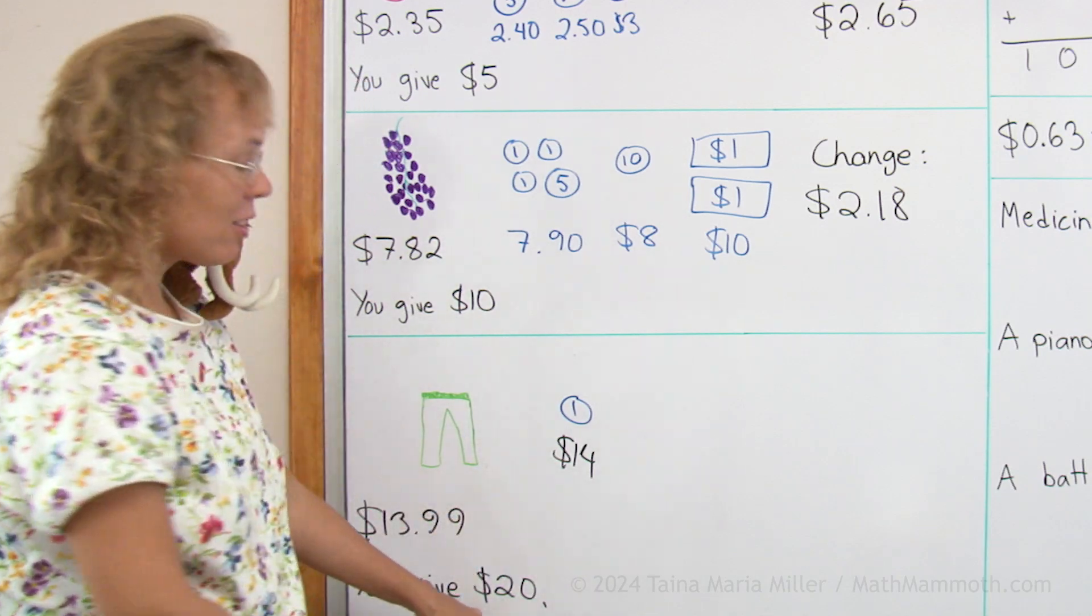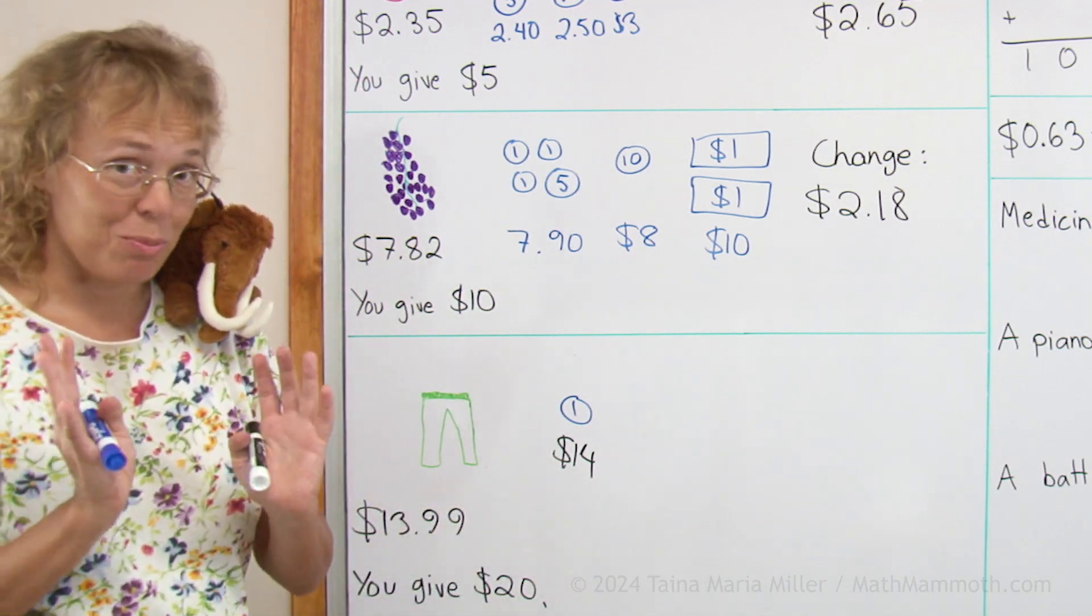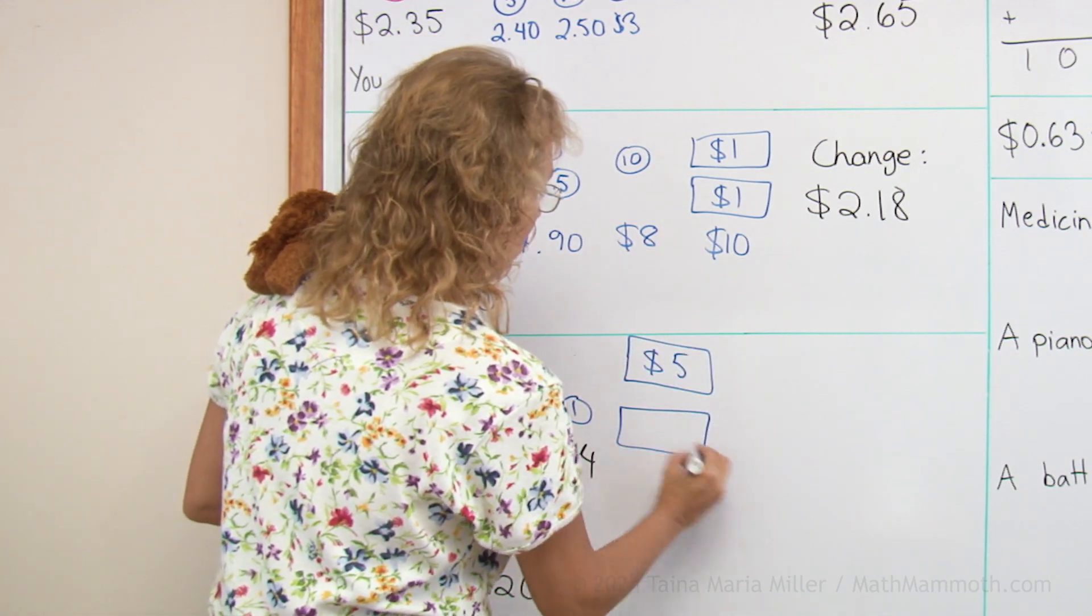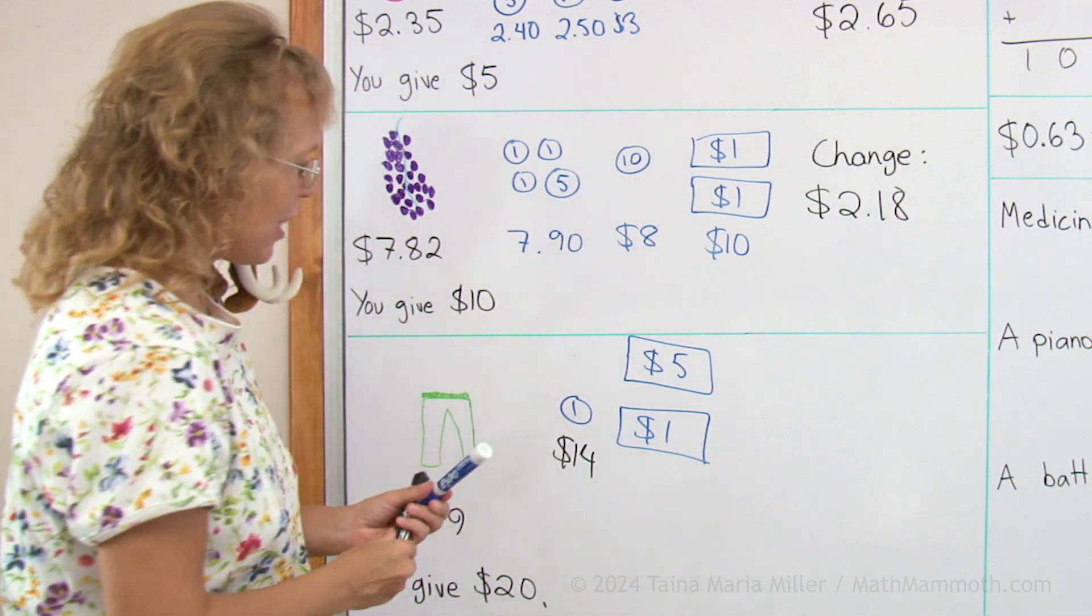After that, it is pretty easy, $14.00 and $20.00. I just need $6.00 more, right? So $5.00 and $1.00. And that makes it. The change is therefore $6.01.